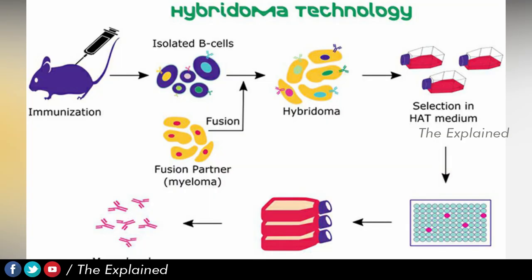Monoclonal antibody production is called Hybridoma technology. In this procedure, antibodies are produced in a controlled way. If you understand the process, it ensures that the physical procedure is carried out properly to produce effective antibodies.